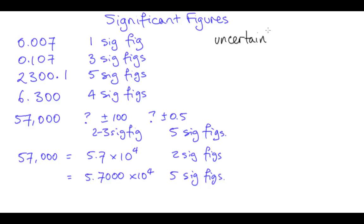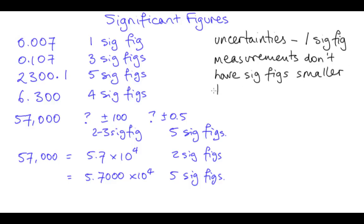One more thing I need to say about significant figures is that errors or uncertainties are only ever given with one significant figure. And the measurement that has this uncertainty should have no digits in decimal places smaller than that uncertainty.